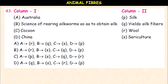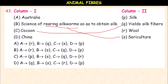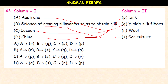Another matching question: Australia is famous for rearing silk worms to obtain silk. Cocoon yields silk fiber. The science of rearing silkworms is called sericulture. China is famous for silk. The matching answers are: A-R, B-S, C-Q, D-P. Option B is correct.